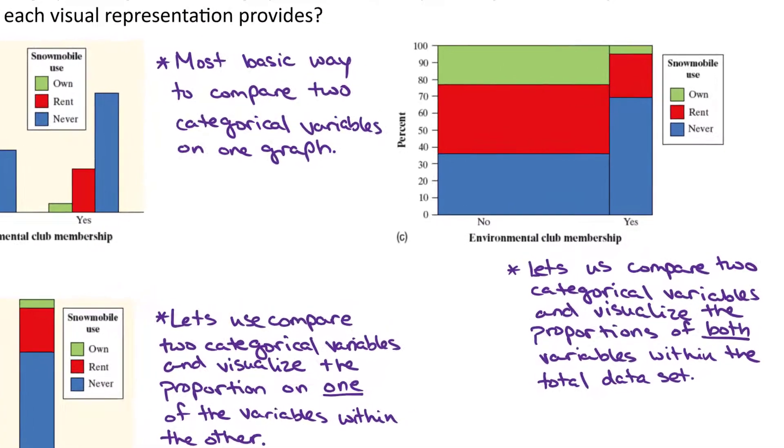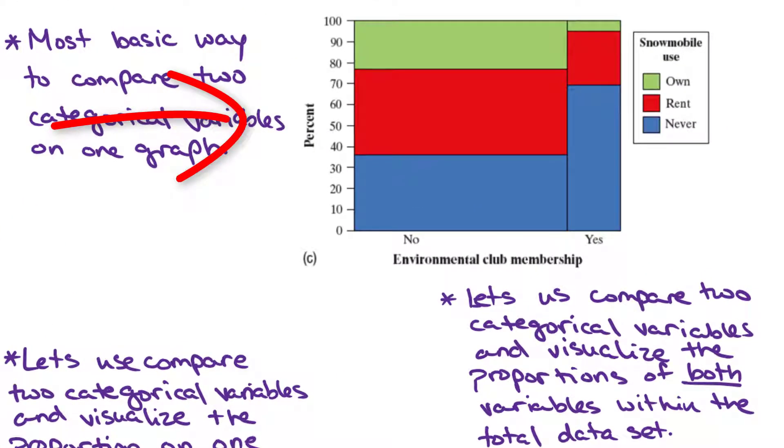And then the last visual representation we have for comparing our categorical variables is the mosaic plot. That's in part C. In a mosaic plot, you have this rectangular shape, that big rectangle, and that's going to add up to 100%. And then we look at the two groups for the variable environmental club membership, yes and no, and we see in this graph much more of our data was represented by those who are not members of an environmental club. We can see because that no category is much larger, that left side of the mosaic plot. And then on the right, we can see the bar that represents those who are members of an environmental club. And then similarly to the segmented bar graph, we're going to break up the never, rent, or own within those different bars.